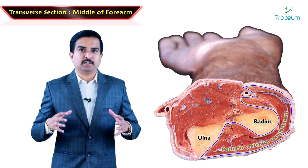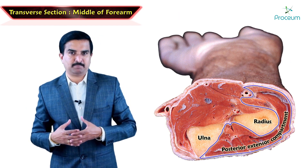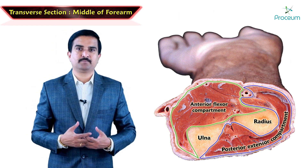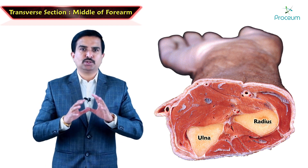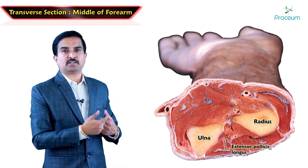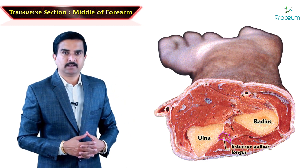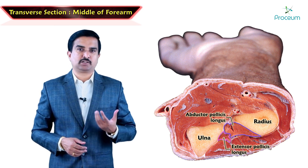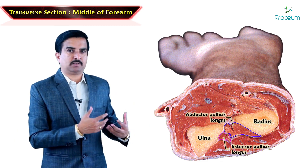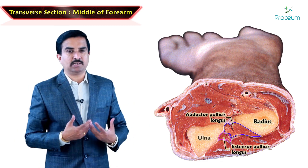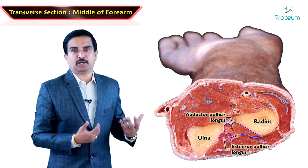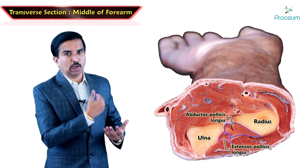Now let us understand the posterior extensor compartment. The two deep muscles seen along with the bones are the extensor pollicis longus and the abductor pollicis longus. The extensor pollicis longus is adherent to the ulna, and the abductor pollicis longus is along the radius.